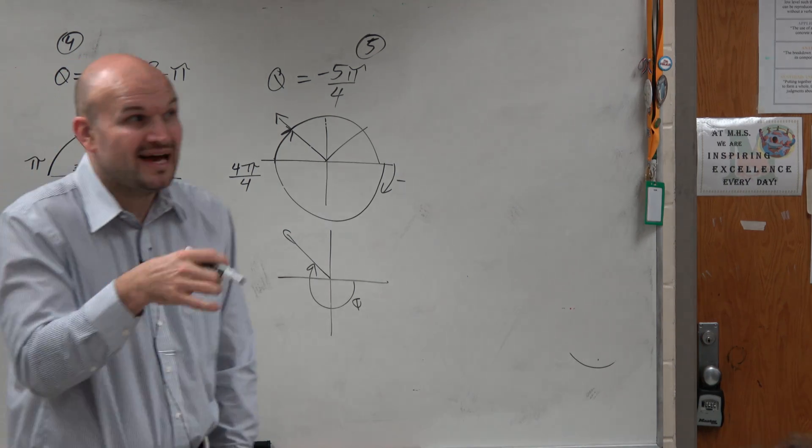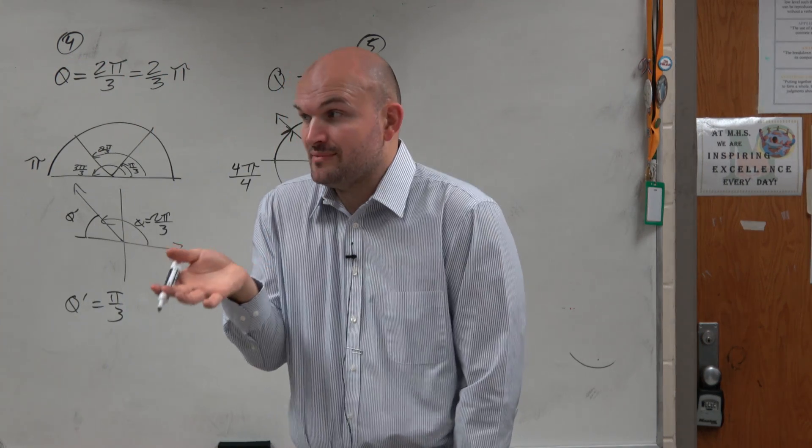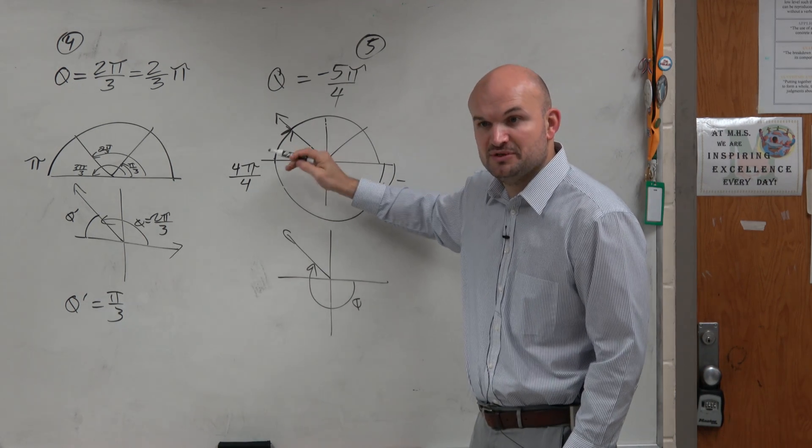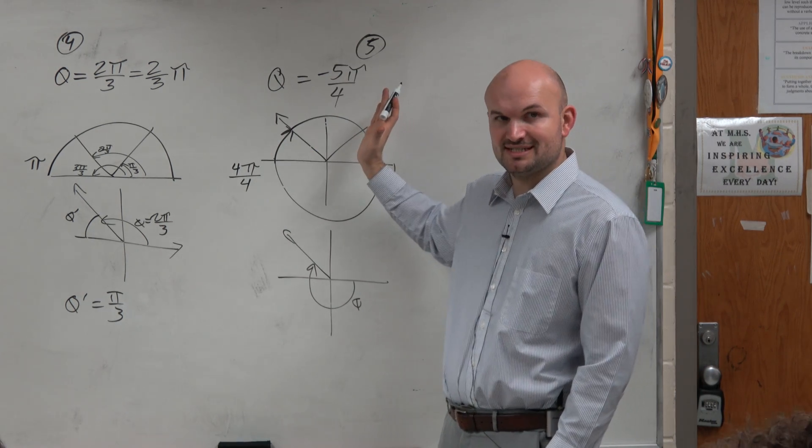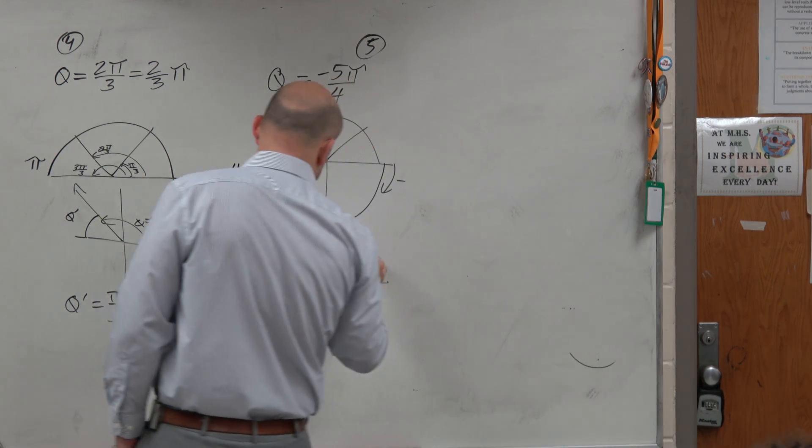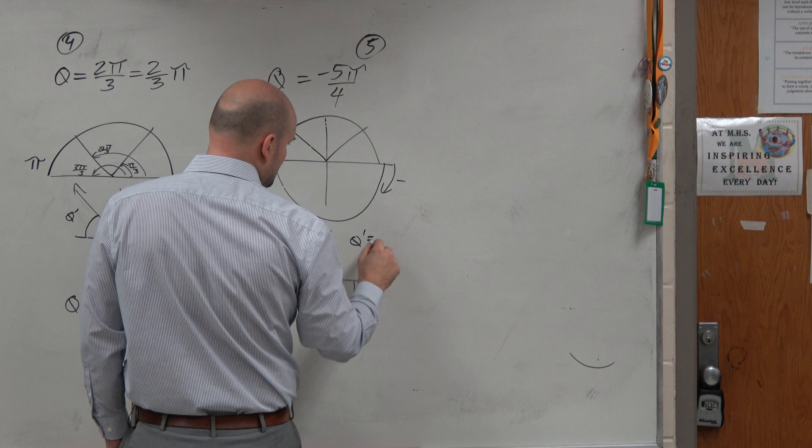Now, let's talk about the reference angle. How far away is that terminal side from the x-axis? Well, all we did from the x-axis, we just went an extra π over 4. So the distance from the x-axis is π over 4. So we'd say the reference angle is π over 4.